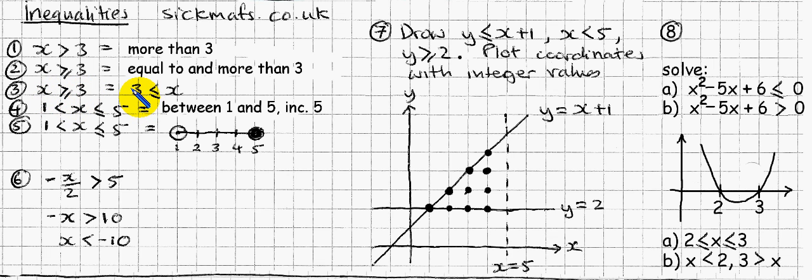So x is bigger than 3 has the same meaning as 3 is less than x. So I should say in full, x is greater than or equal to 3 is the same as 3 is less than or equal to x.